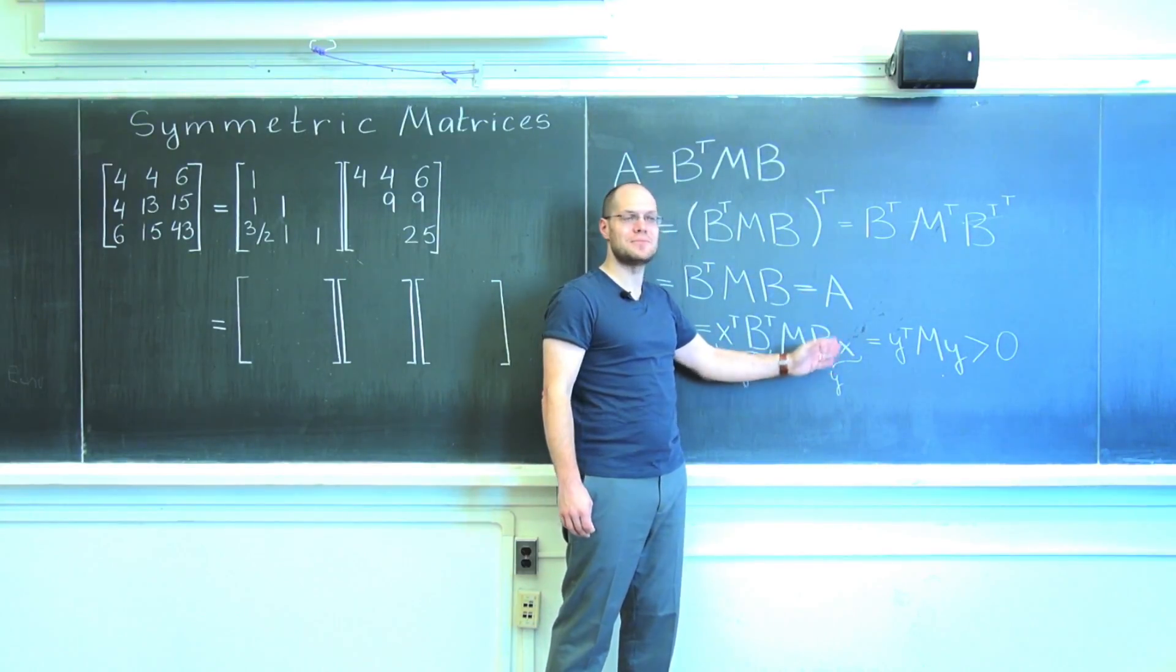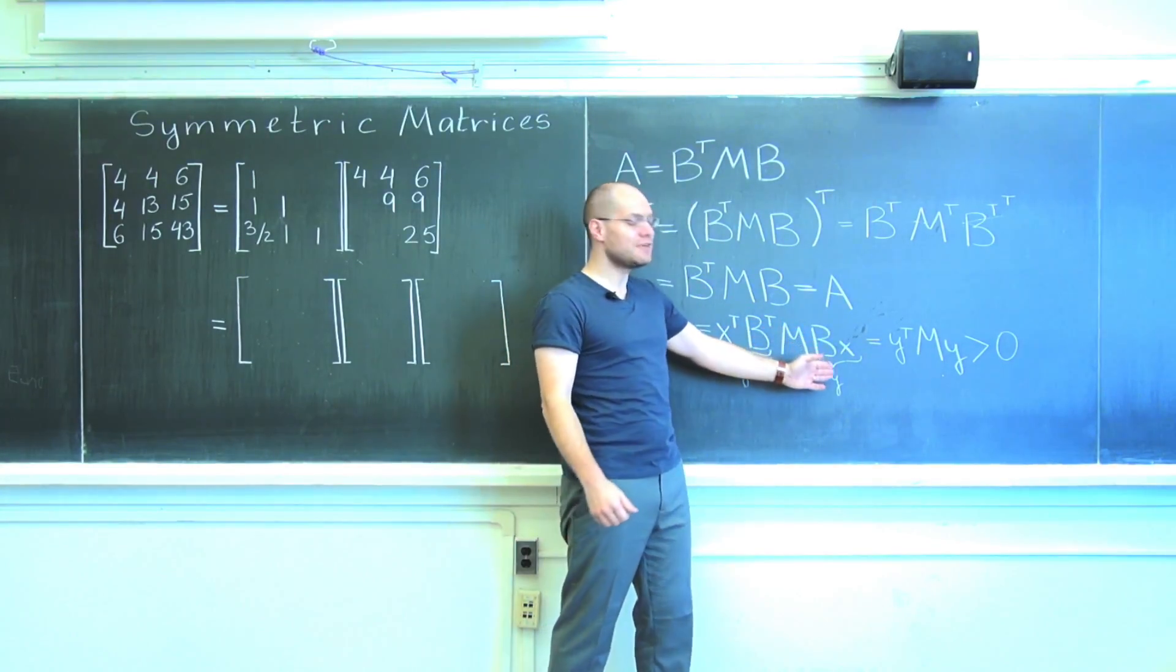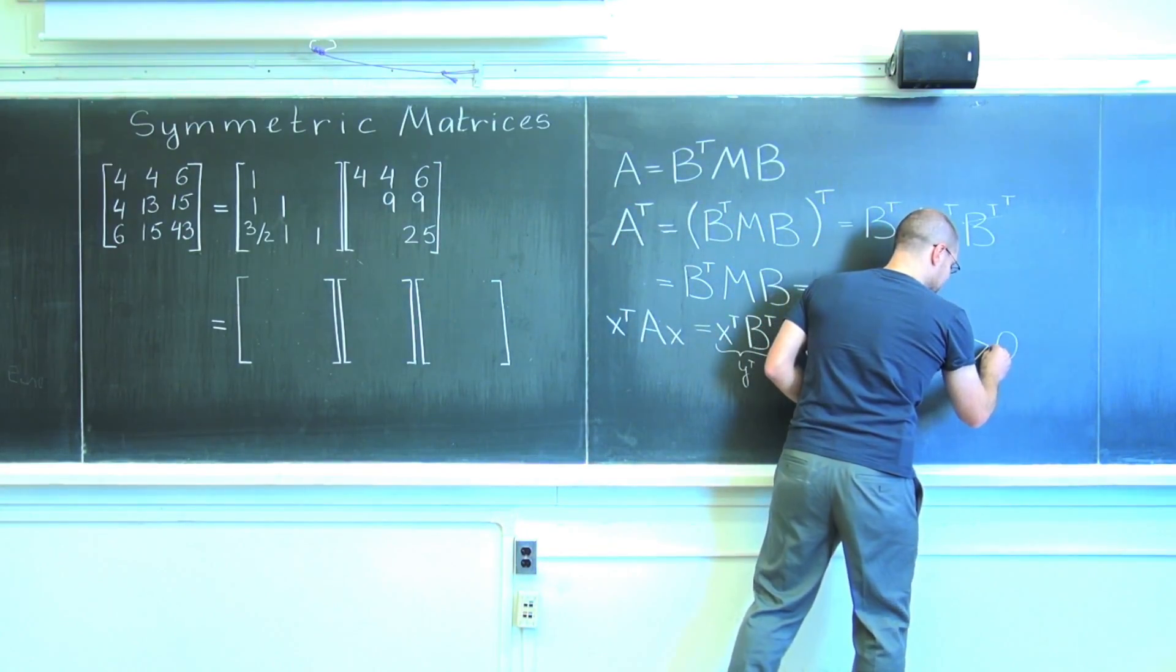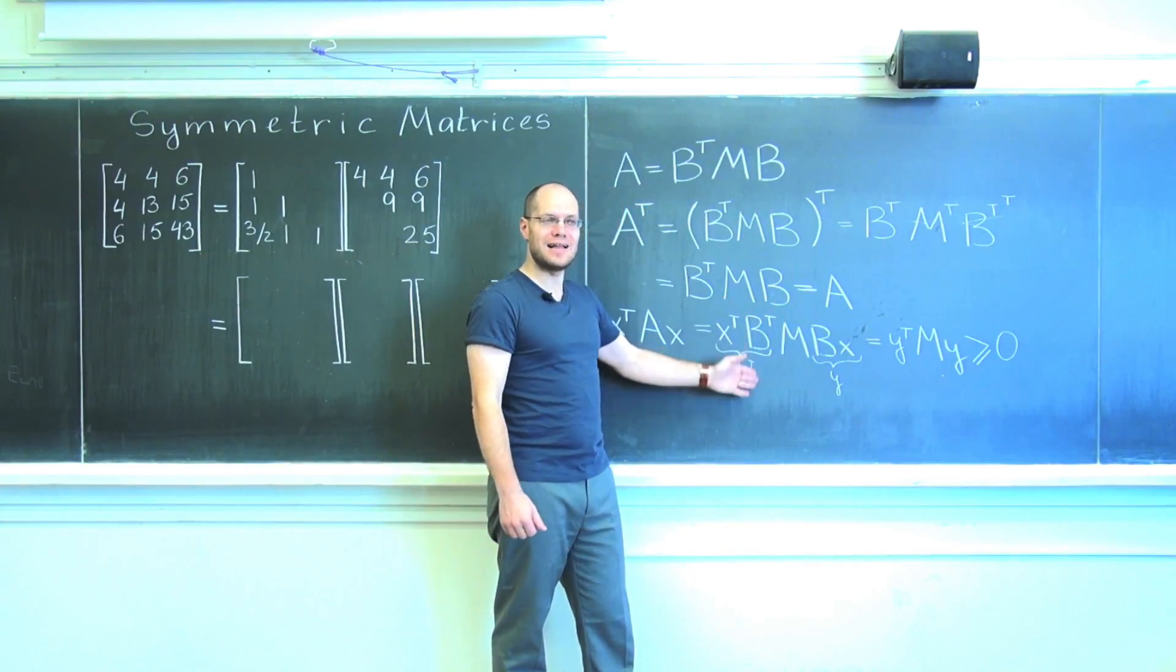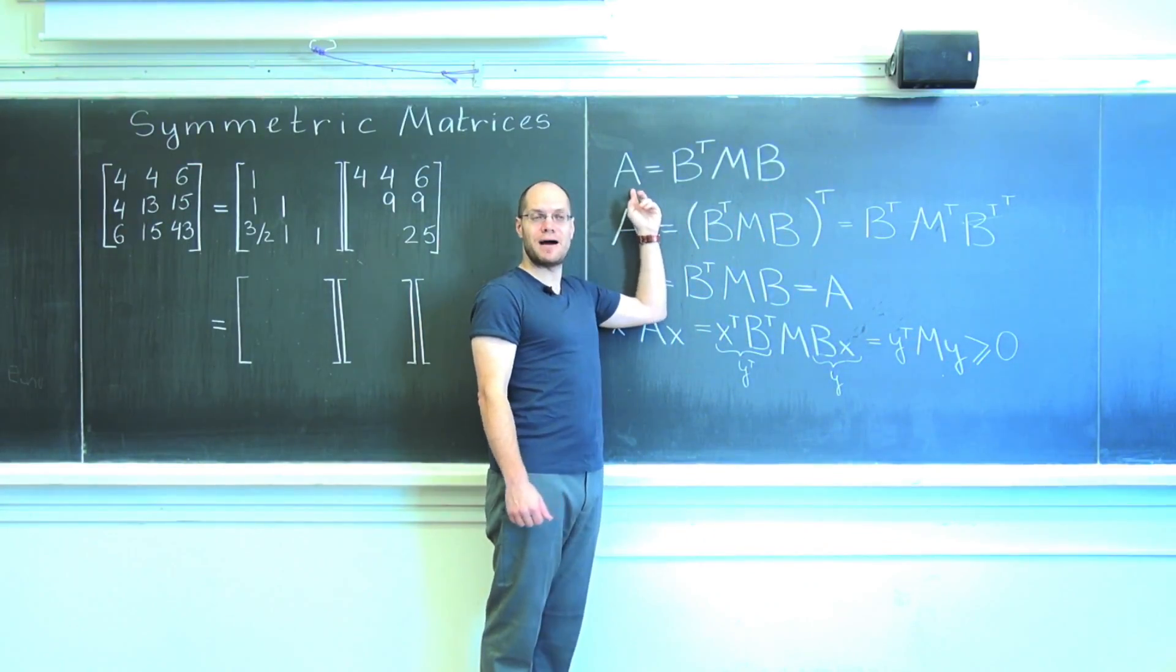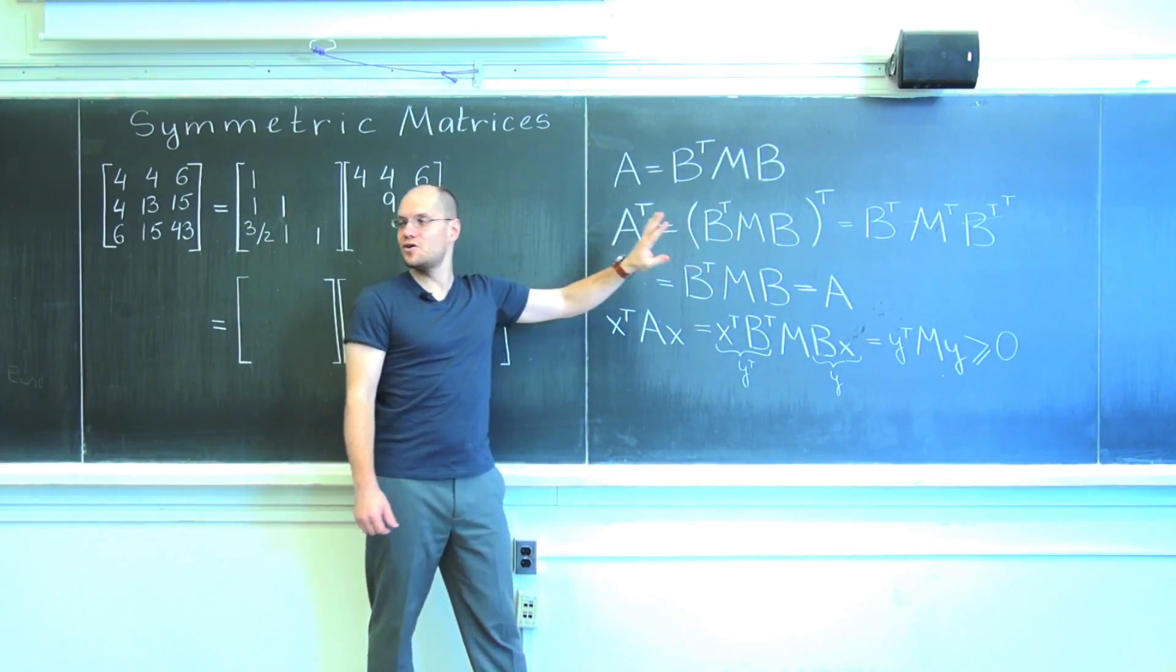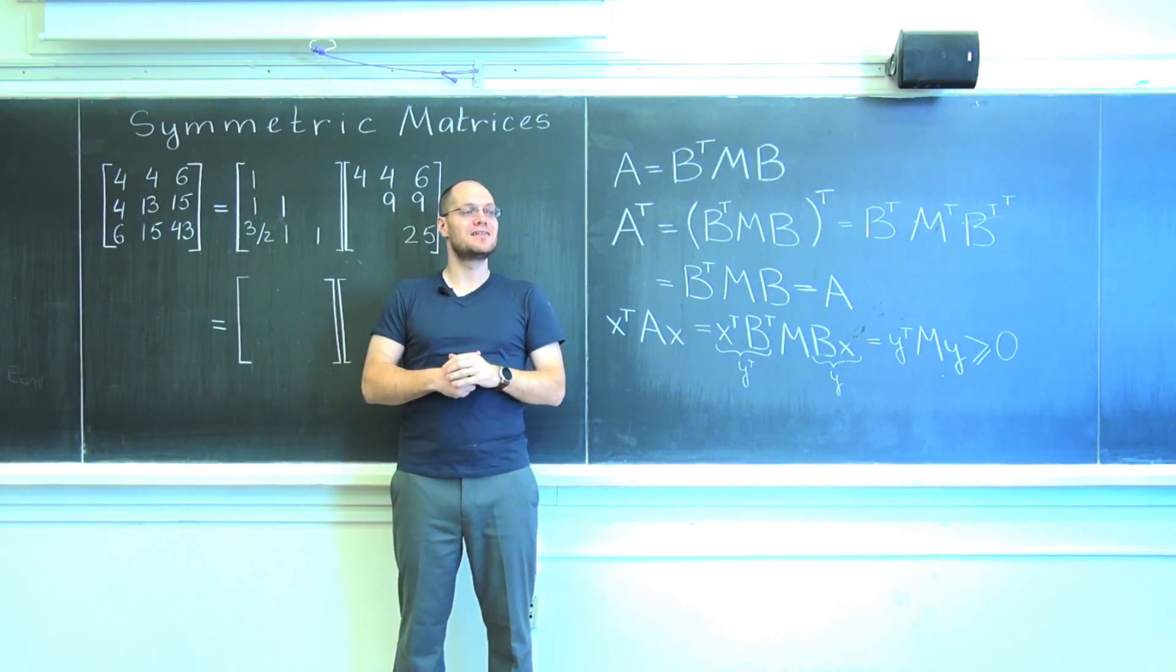Under all other circumstances, in other words when the columns of B are not linearly dependent—in other words are linearly independent—Y will never be zero for a non-zero X, and therefore this expression will always be positive. To account for the possibility that B has a non-trivial null space, we have to put greater than or equal to zero, with the additional remark that if the columns of B are linearly independent, then it's always a strict inequality and the matrix A is strictly positive definite. If the columns of B are linearly dependent, then it's positive semi-definite. Keep this in mind because this observation will be key for the implications of the two properties of symmetric matrices that we're about to discuss.